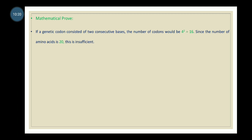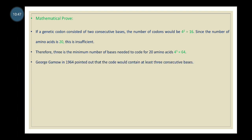Here is a mathematical proof of the genetic code. If a genetic codon consisted of two consecutive bases, the number of codons would be 4² = 16. Since the number of amino acids is 20, this is insufficient. Therefore, the minimum number of bases needed to code for 20 amino acids is 4³ = 64. George Gamow in 1954 pointed out that the code would contain at least three consecutive bases. This is the mathematical proof that the genetic code is a triplet.